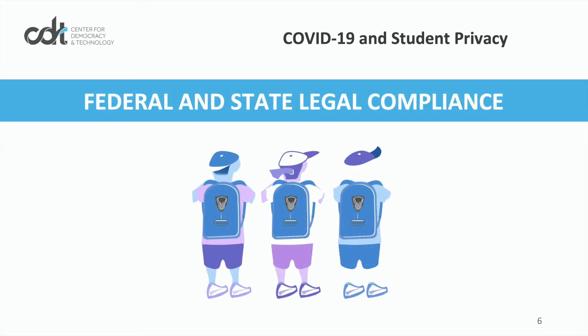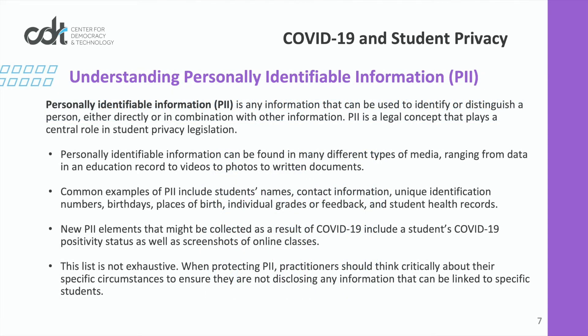Now we're going to look at federal and state legal requirements for protecting student privacy that should inform current practices of using data and technology to support distance learning. First, it is important to understand which data require protection. Personally identifiable information, or PII, is an important legal concept with a central role in protecting students. It refers to any information that can be used to identify a person, either directly or in combination with other information.